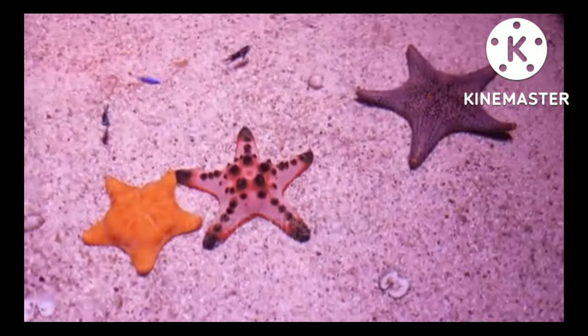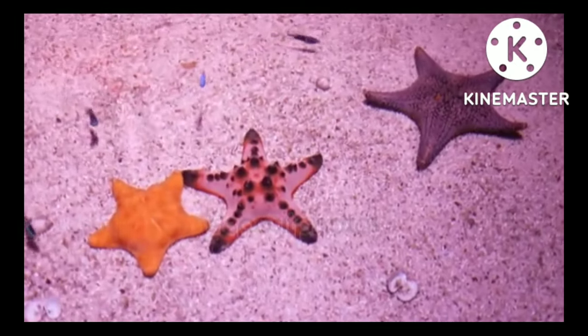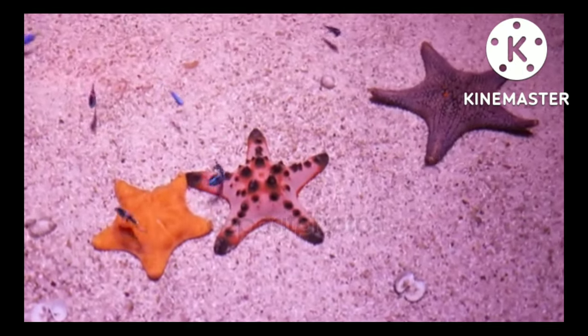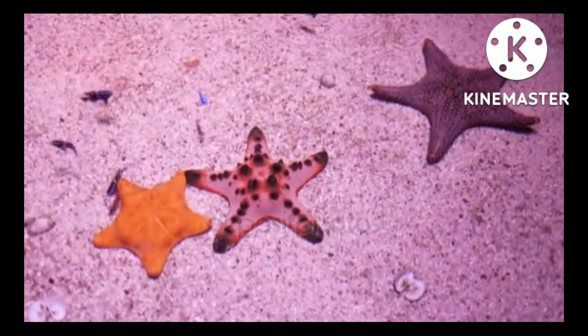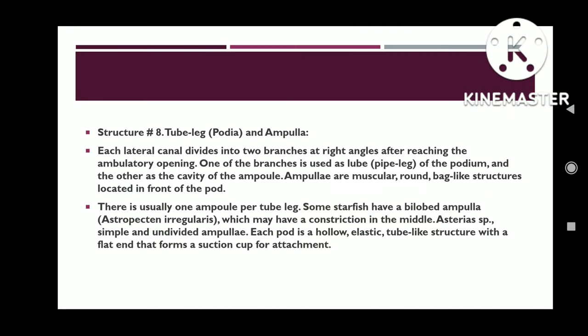The valve regulates the flow of fluid from the lateral canal to the ampullae and podium, that is the tube foot. Each lateral canal divides into two branches at right angles after reaching the ambulacral opening; one of the branches leads to the tube foot.